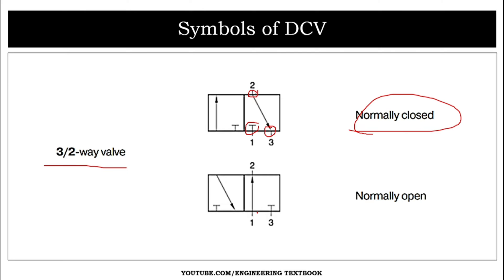In the next figure, port one is connected to port two — that is, the pressure port is connected to the work port. The exhaust port is closed. This is known as the normally open position because oil is flowing through the cylinder.